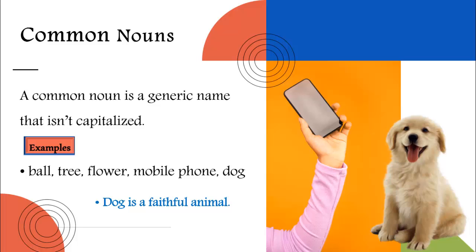Note that we don't know exactly which tree, ball, or dog we are referring to. Since these nouns aren't naming anything specific, they don't need to start with a capital letter unless they begin a sentence. For example, the word 'dog' is a common noun, and it has been capitalized here because it begins the sentence.